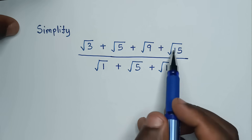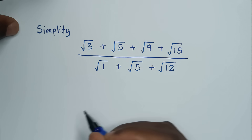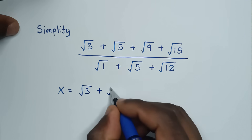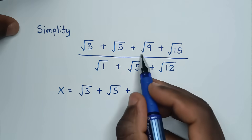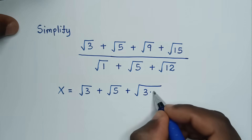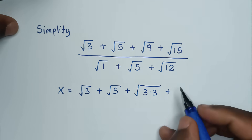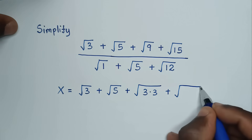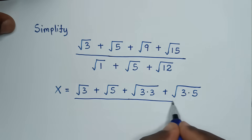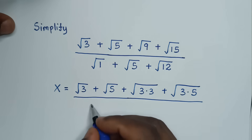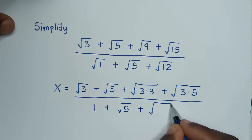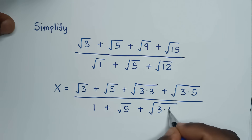Now, for the solution, we let this radical expression equal x. So x is equal to square root of 3 plus square root of 5 plus square root of 9, where 9 is 3 times 3, then plus square root of 15, where 15 is 3 times 5, over 1 plus square root of 5 plus square root of 12, where 12 is 3 times 4.